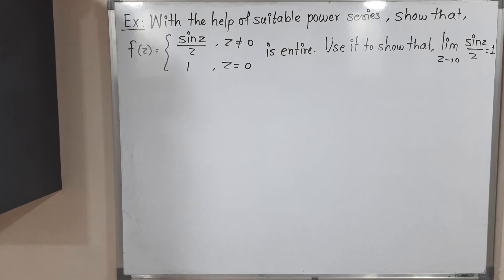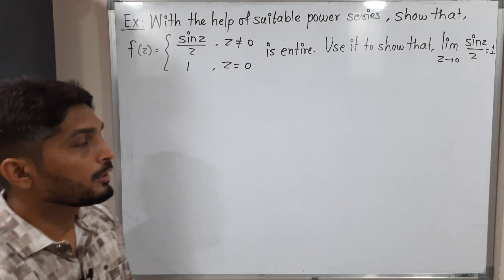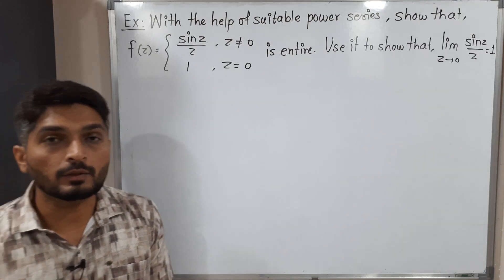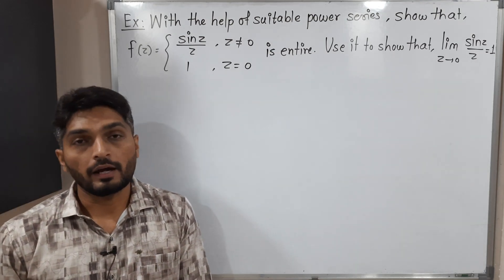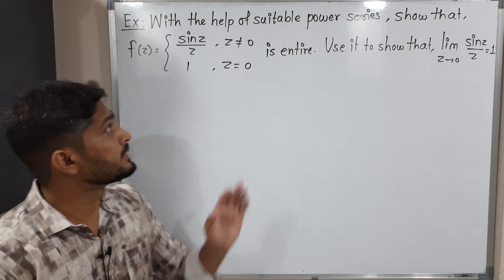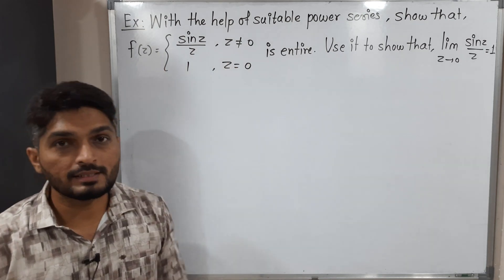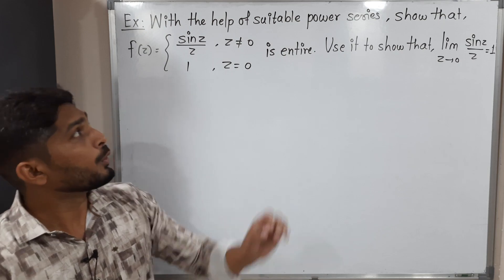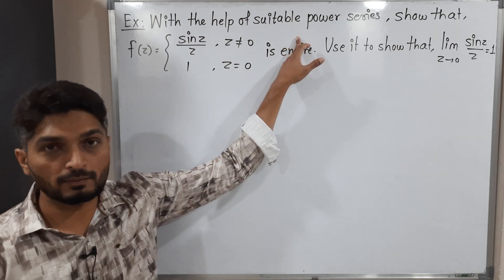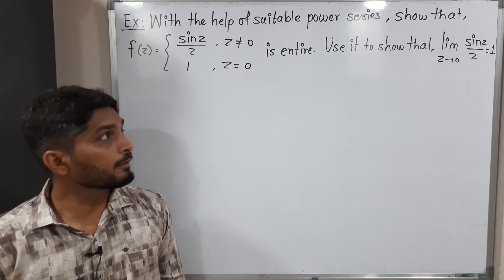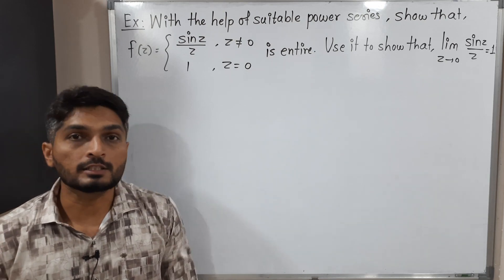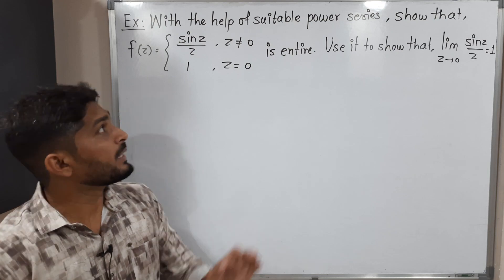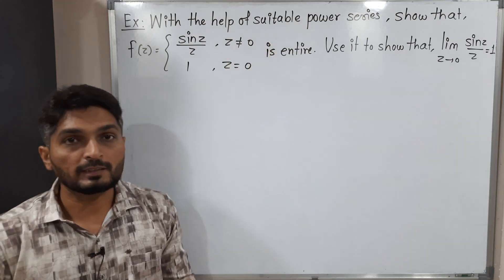Hi everyone. In this video we are going to discuss this example. We have the function f which is defined as follows: for z equal to 0 its value is 1, and for z not equal to 0 its value is sin(z)/z. We have to prove that it is an entire function with the help of a suitable power series, and after that we have to prove the value of this limit is 1 using that power series again.